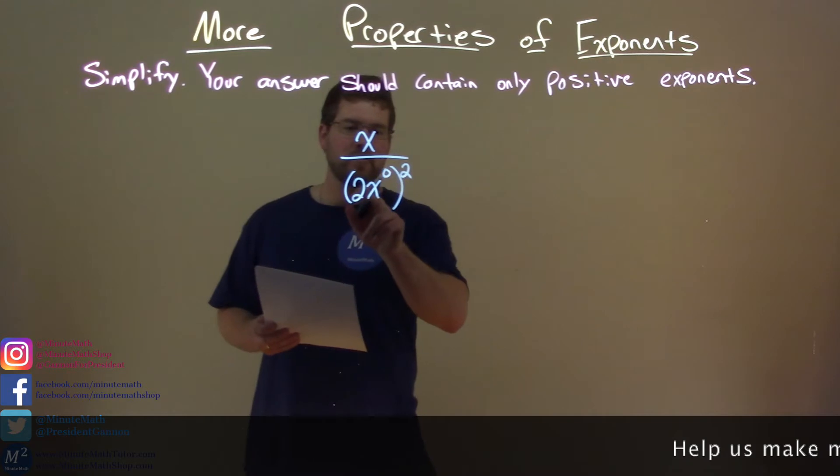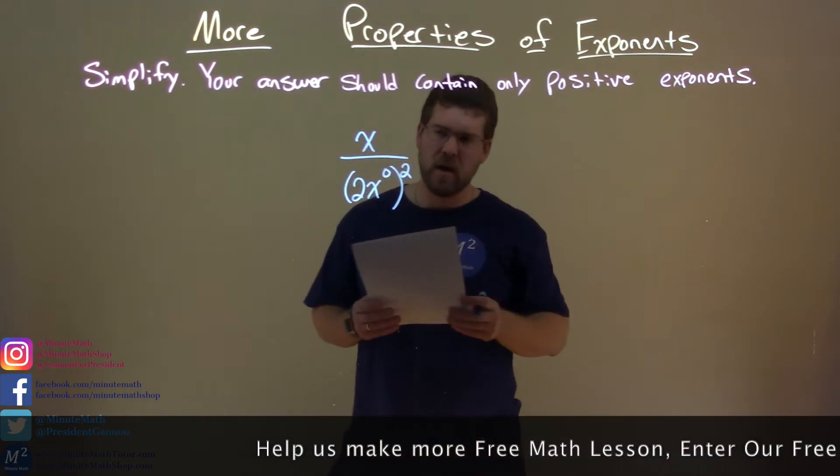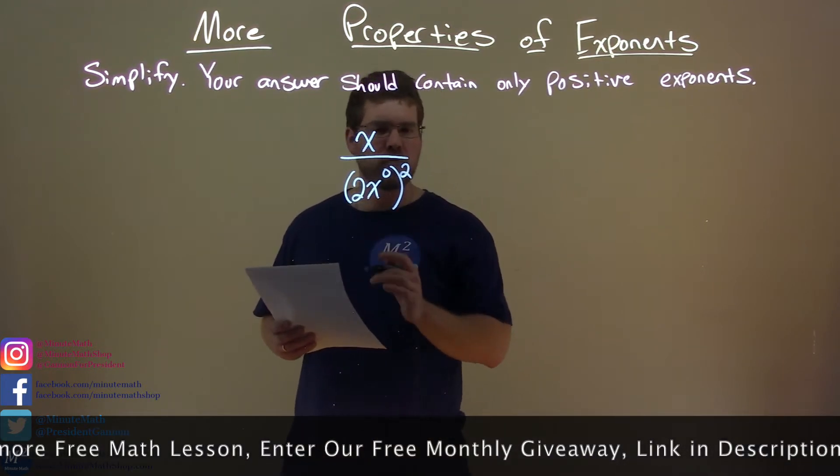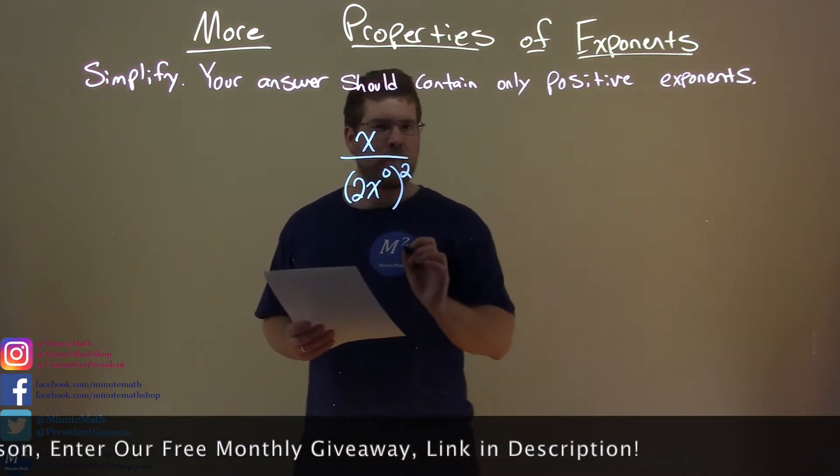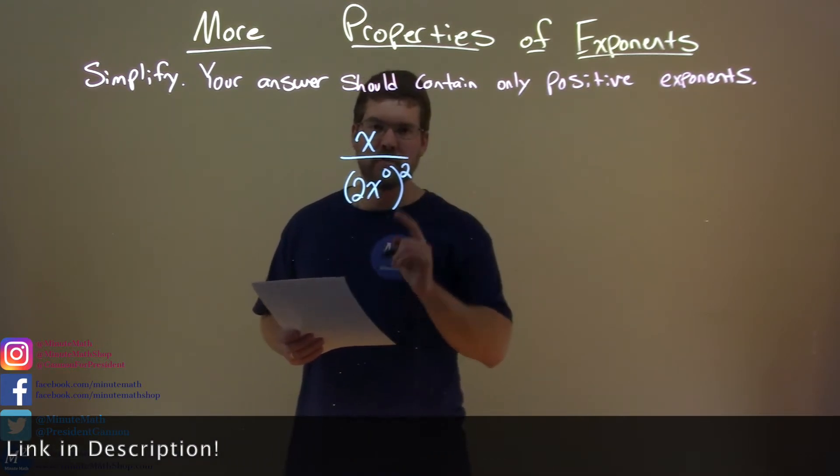x over 2x to the zero power all squared. What would I want to do here first? Okay, this one's a little tricky. This x to the zero power, I'm going to recognize that and know that anything to the zero power is just 1.